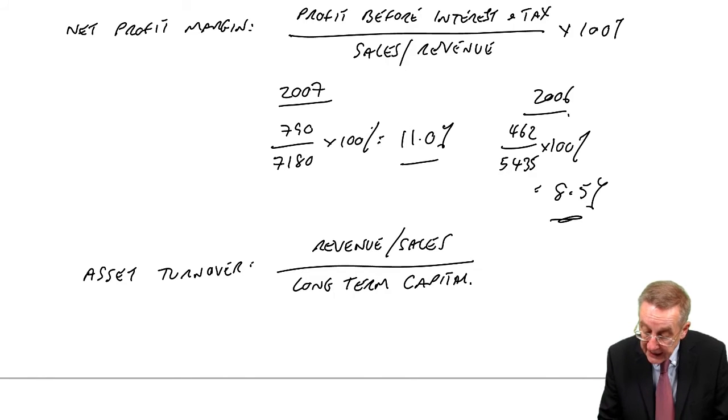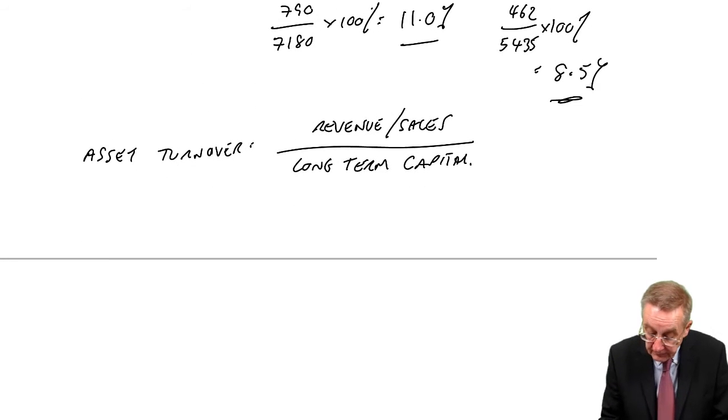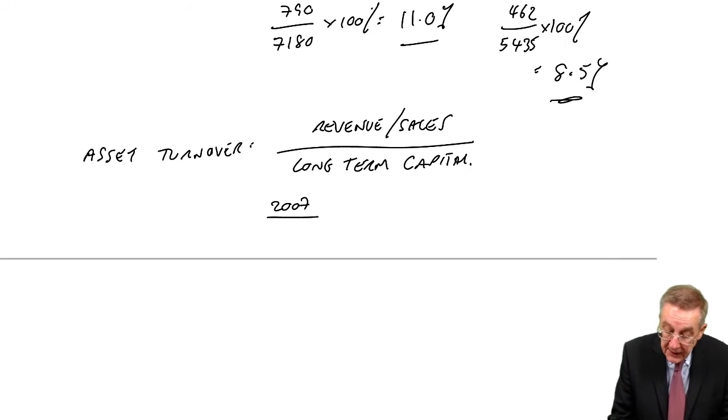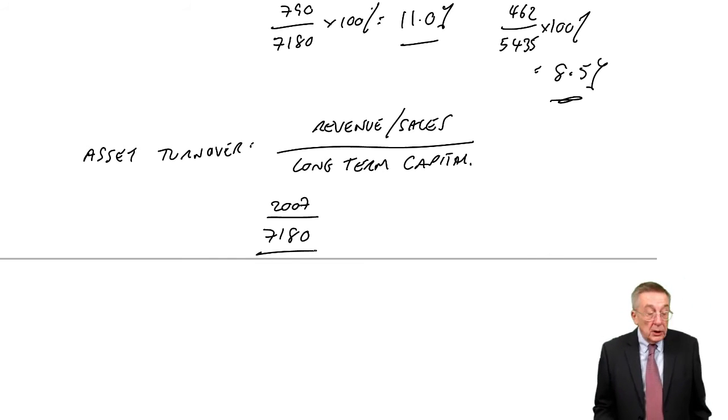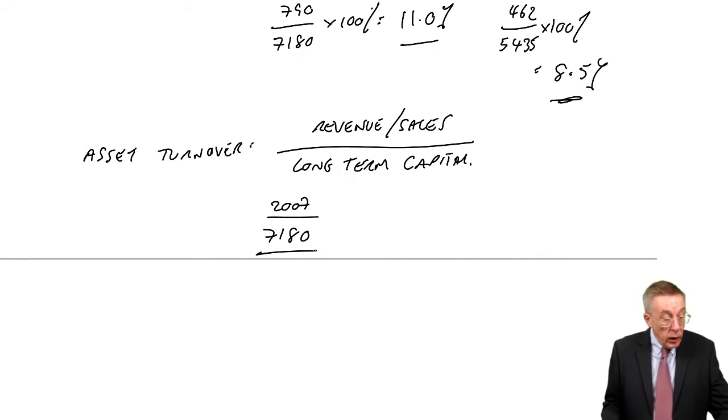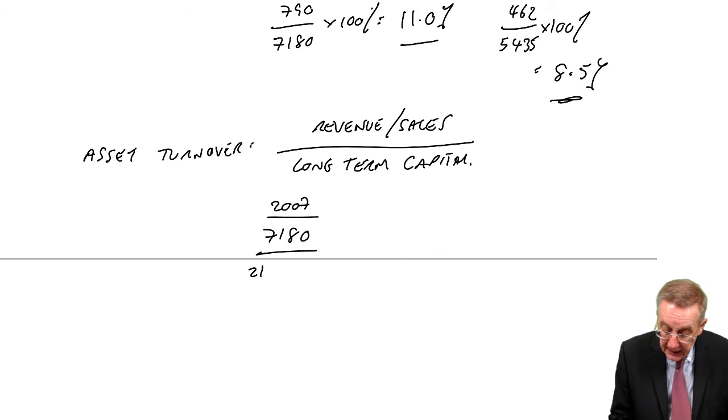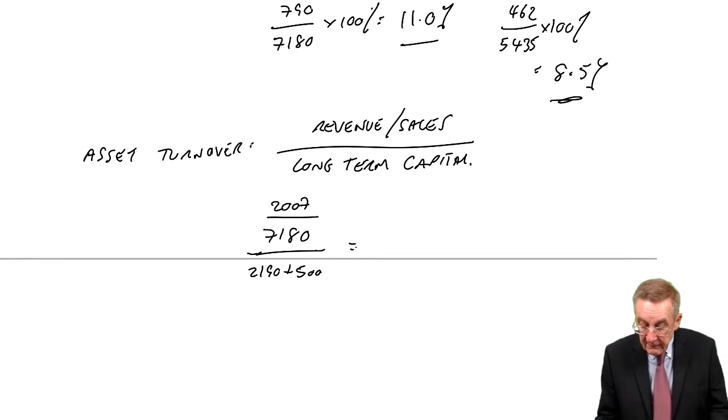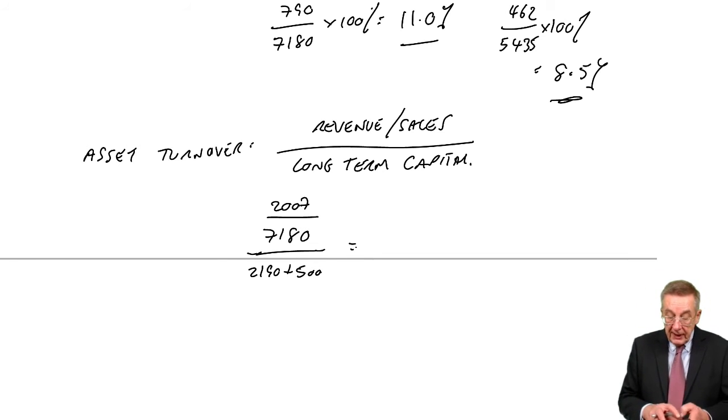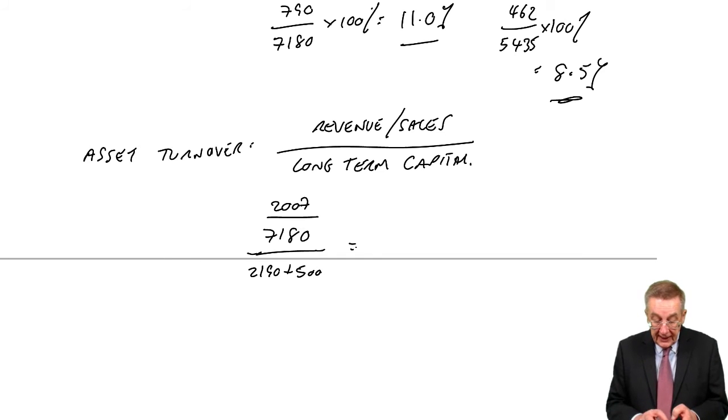Check the figures before I say more. In 2007, the revenue was 7,180. The total long-term capital we had earlier, from shareholders, was 2,190. From long-term borrowings was 500, the non-current liabilities. And so 7,180 divided by 2,690 comes to 2.67. So our sales were 2.67 times what you might call the size of the company.